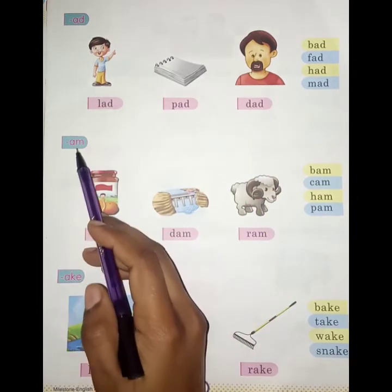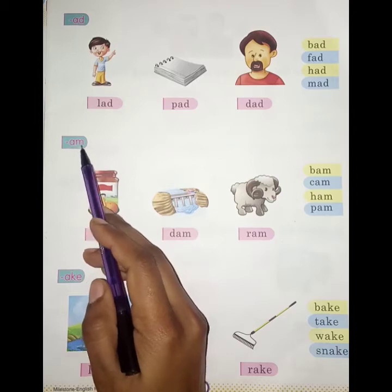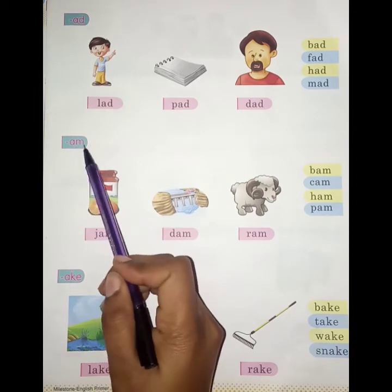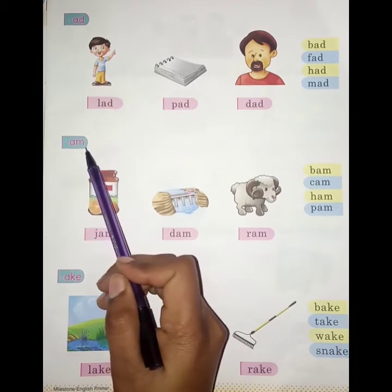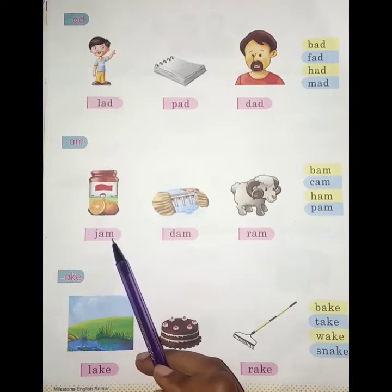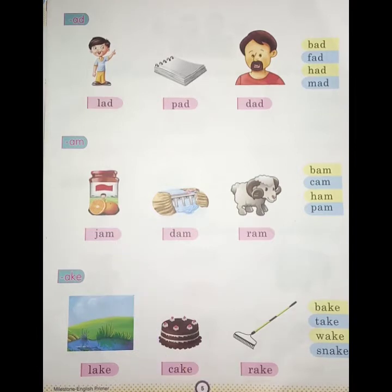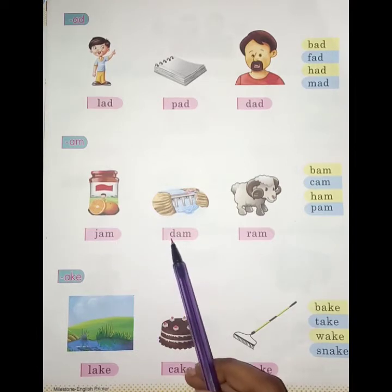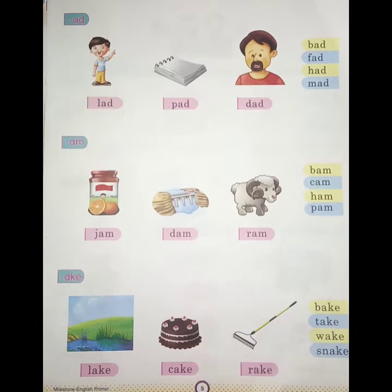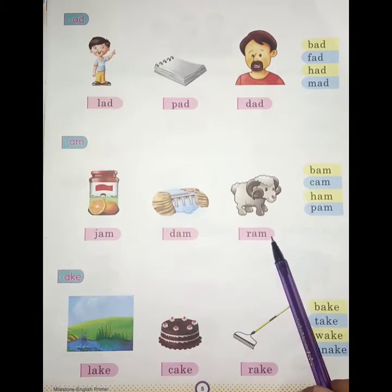And now A, M. So students, what will the A, M sound be? Am. Like J, A, M — jam. D, A, M — dam. R, A, M — ram.